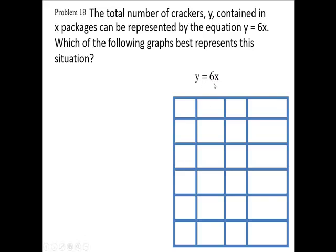y equals 6x. Now x is the number of packages. We're going to take that times 6, and we'll have the number of crackers. And then we'll represent that with an ordered pair. Now we have zero packages, so I don't have any crackers.